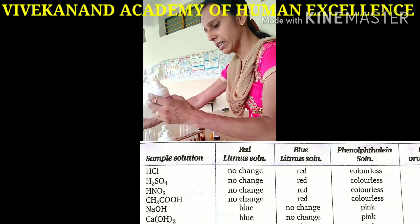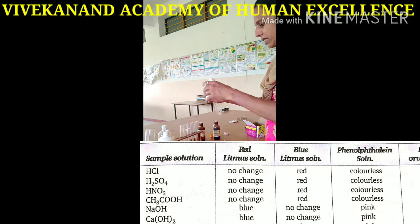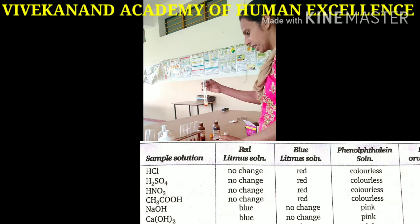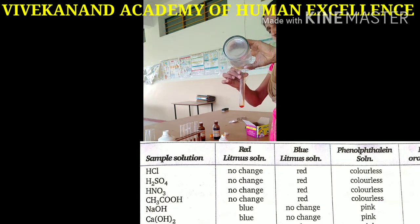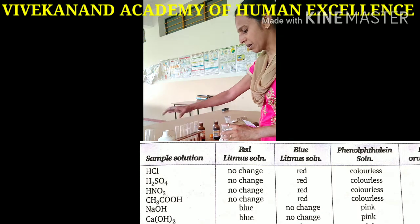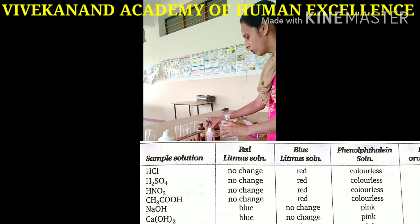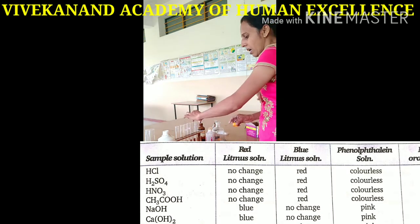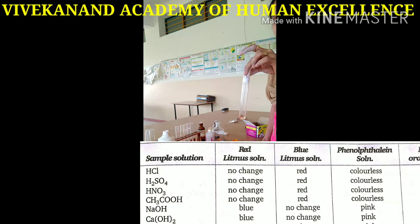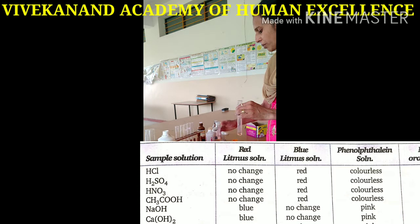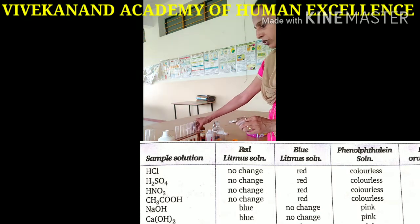Another indicator is methyl orange, which is an acid-base indicator. It remains as it is — orange in color — when we add acidic medium or acidic solution. By the appearance of two different solutions, we cannot identify if a solution is basic or acidic. But when we dip red litmus or blue litmus paper into it, or use methyl orange indicator, then by the change in color we can easily identify whether it is a basic or acidic solution.